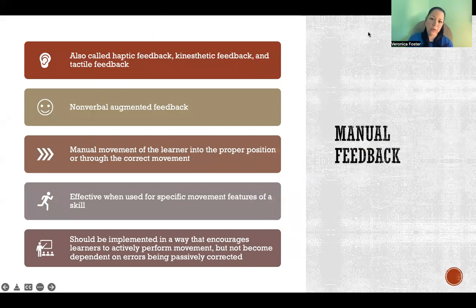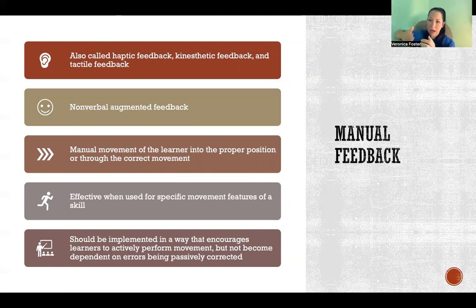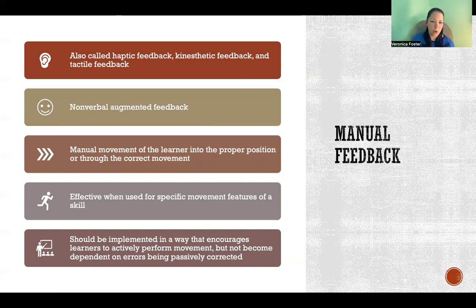Another way to deliver feedback is manual feedback, also referred to as haptic feedback, kinesthetic feedback, and tactile feedback. Manual feedback is the actual physical moving of the person passively into the correct position. For example, in archery, if the learner pulls back and is in their position and the coach comes over and moves their arm back or moves them manually into the correct position, that's manual feedback. It can be effective when there is a specific movement feature that needs to be corrected that might be difficult to describe or demonstrate, because the person can actually feel in their body what the correct position is supposed to be.